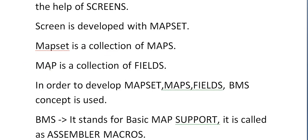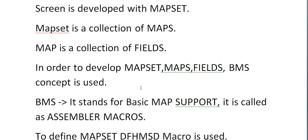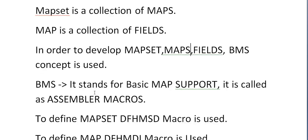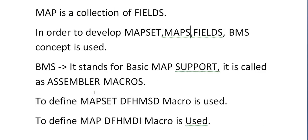In order to develop map sets, maps, and fields, we need a certain programming approach called BMS — Basic Map Support. BMS is also called Assembler Macros. To define a map set, the DFHMSD macro is used.